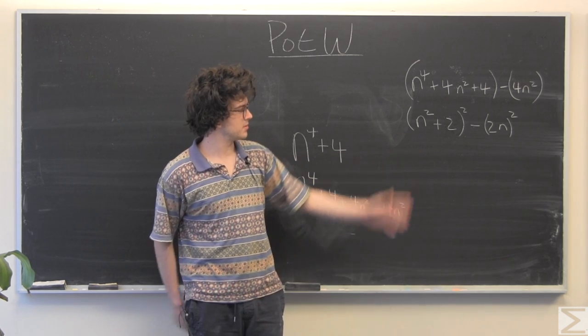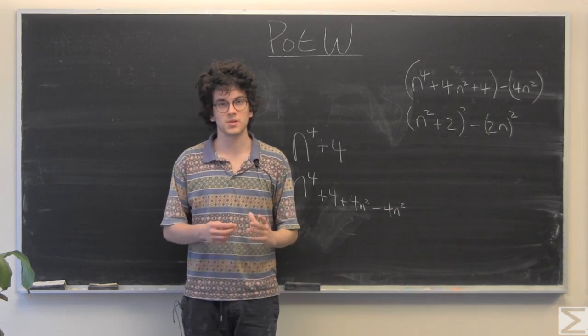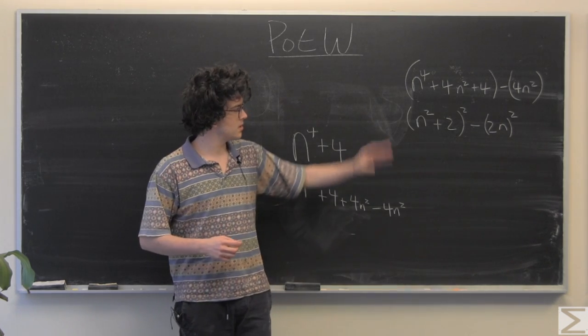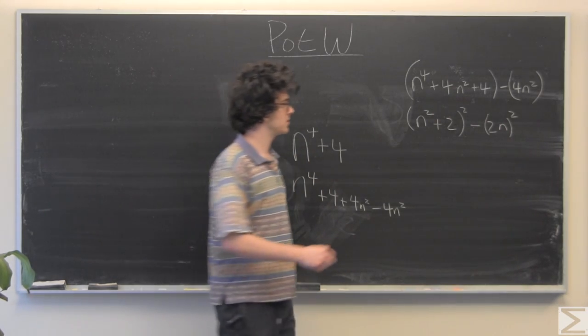So now this is just the difference of two squares, and if you remember, a squared minus b squared is a plus b times a minus b. So I'm just going to set this equal to a, this equal to b in that, and rewrite it once more.